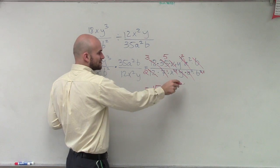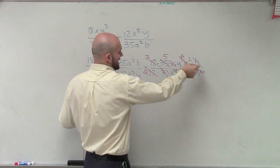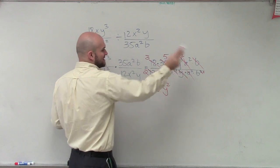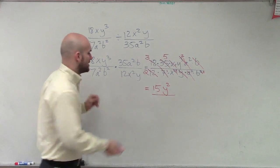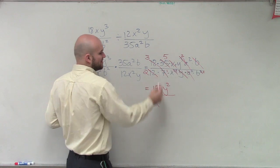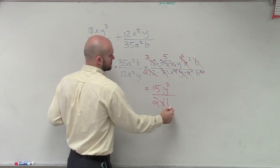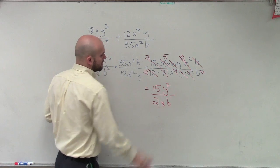The x here canceled. Y squared. The a's divided out and the b divided out. So I just have 15y squared and then my denominator, I have 2 times x to the first, b to the first, which we don't need to write the 1's up there.